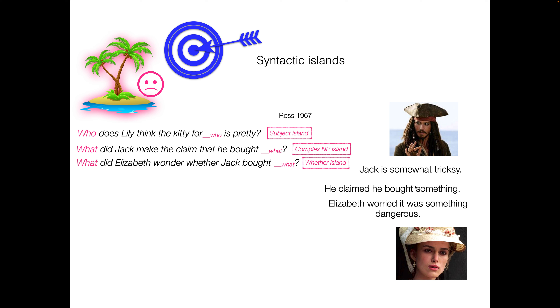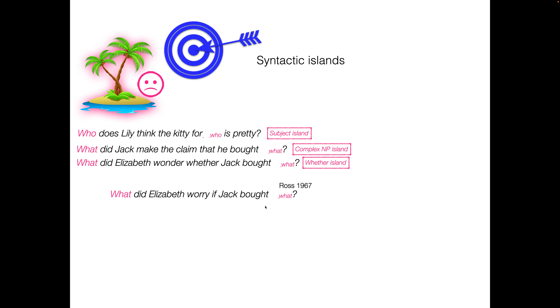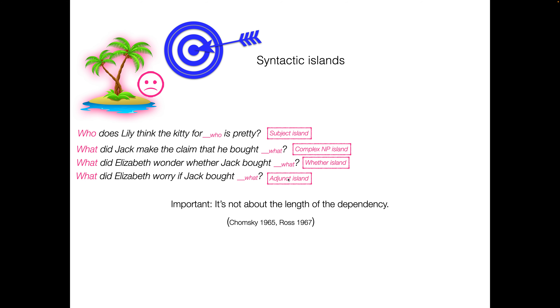Going back to Jack, who claimed he bought something — Elizabeth worried it was something dangerous, because knowing Jack it might be. 'What did Elizabeth worry if Jack bought?' Again, not so great, not so preferred. This has been known as an adjunct island.